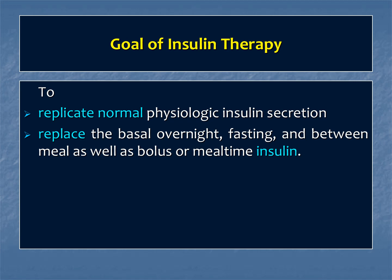In the second part, what we want to achieve while using insulin therapy in diabetes is the goal — basically to replicate the normal physiological insulin secretion. We want to maintain the normal insulin environment in the body.